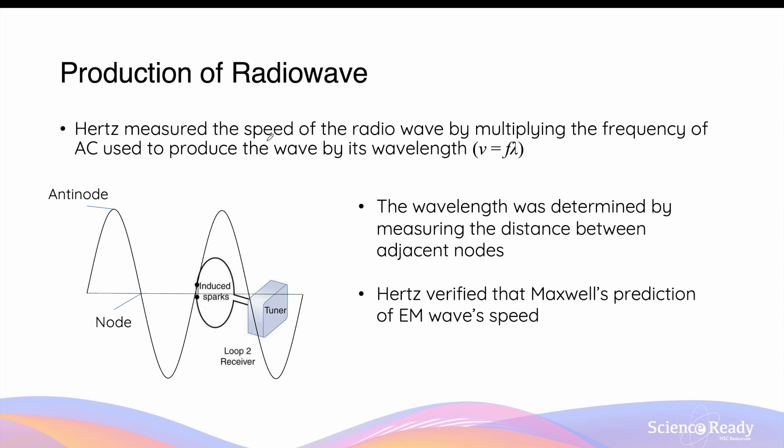Hertz was also able to calculate the speed of this radio wave by multiplying the frequency of the AC supply used to generate the electrons and the wavelength of the radio wave. He noticed that there were certain positions at which the sparks were not forming in the receiving loop of wire. This corresponded to one of the nodes of the transverse wave.